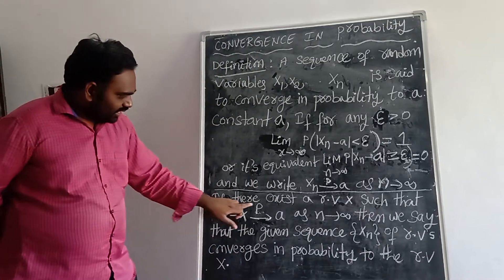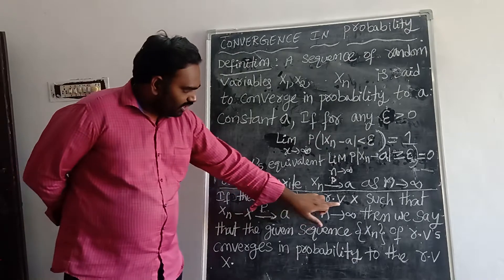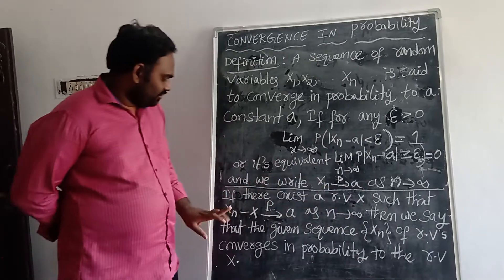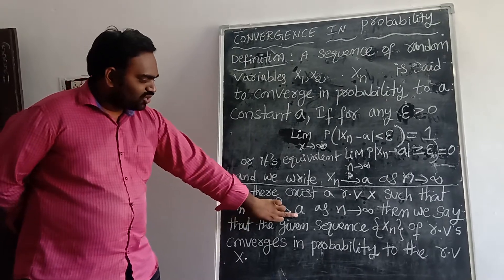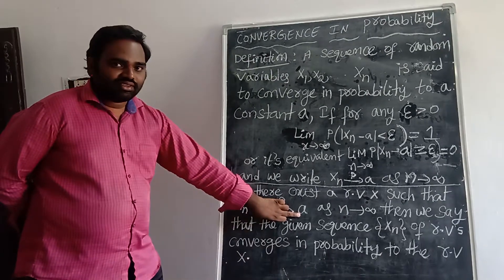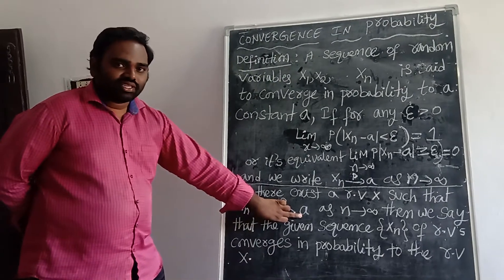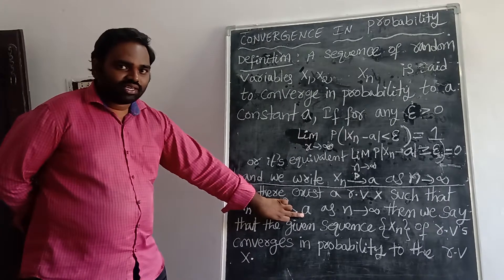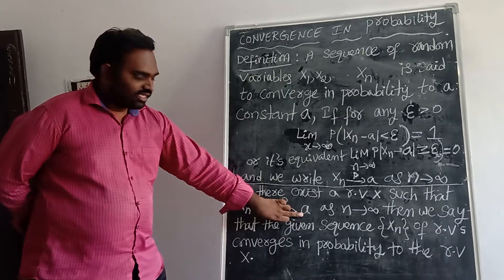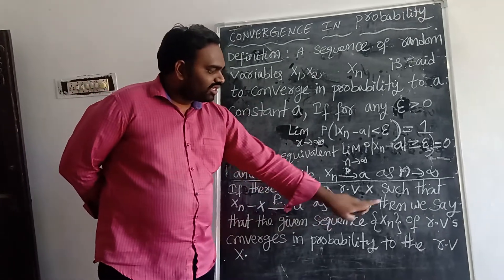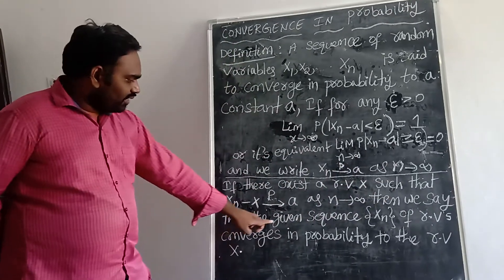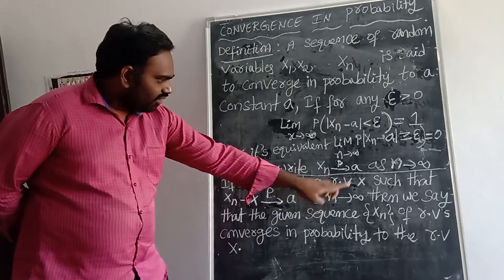If there exists a random variable X such that Xₙ minus X tends to a - we are taking here Xₙ is one sequence, from that sequence we subtract the variable X, that tends to small a as n tends to infinity -